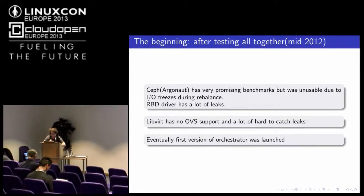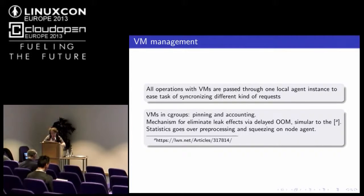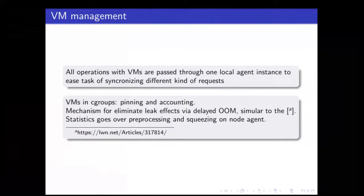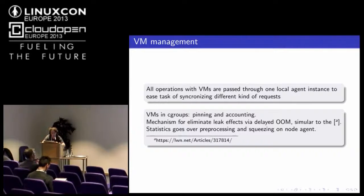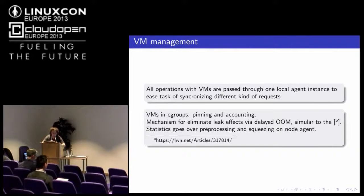We eventually launched the first version of our orchestrator. It works quite differently than OpenStack, CloudStack, or any other existing cloud orchestrator. We put everything for local node management into one local engine to prevent synchronization issues which currently exist in OpenStack, for example. All operations — ingesting agent messages, changing cgroup parameters, migration, start, and shutdown — are passed through a single instance. This is not a modular design but it has a lot of advantages.